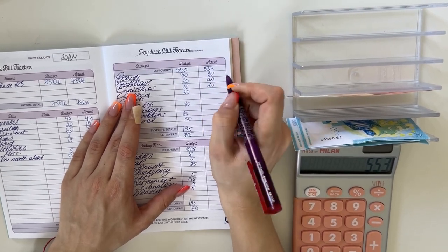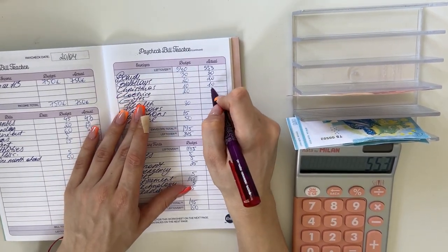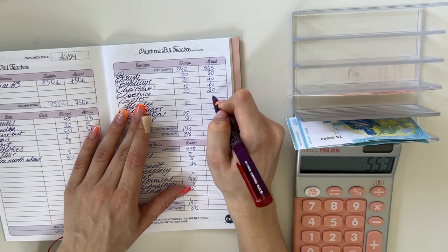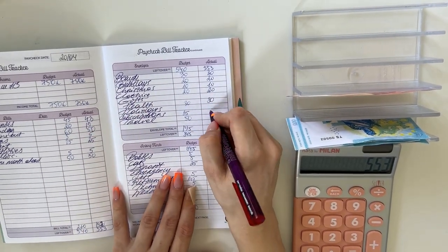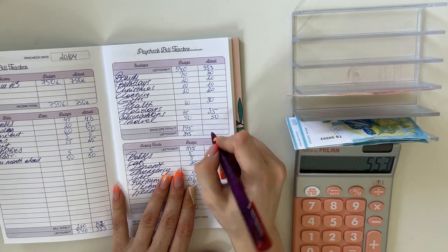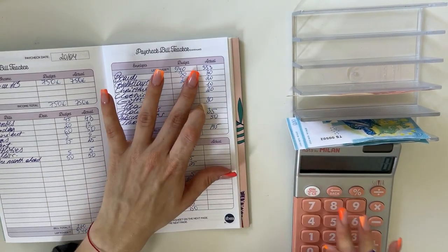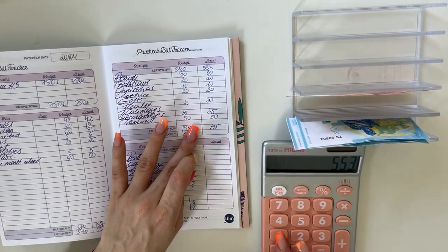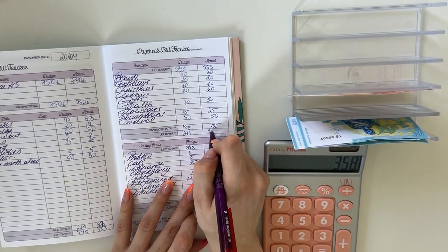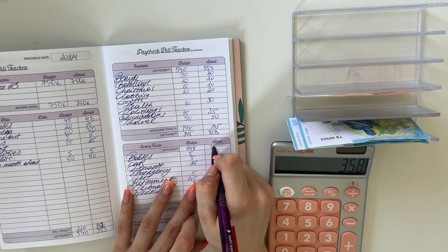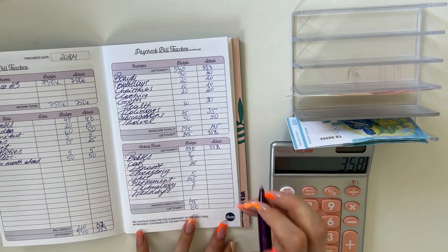$30 for beauty, $20 for birthdays, $10 for Christmas, $20 for clothing, $30 for health, $35 for subscriptions, and $50 for travel. So $553 minus $195 is $358. We're bringing that down here to long-term sinking funds.